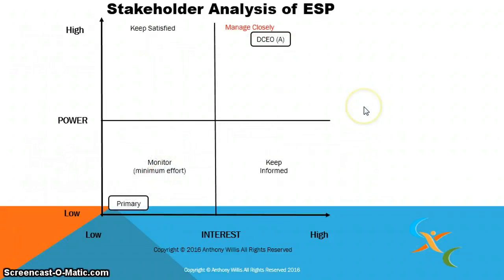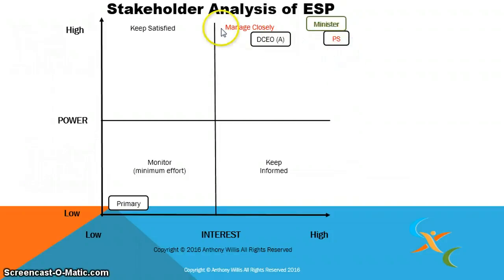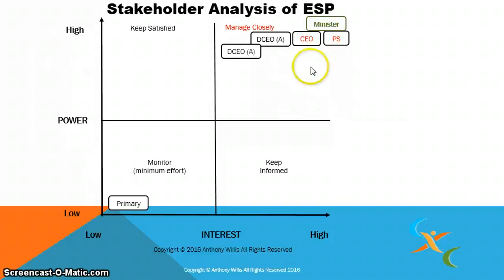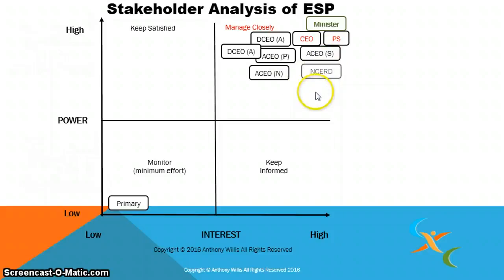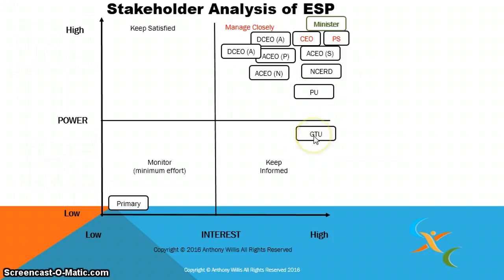This structured approach gives you a better understanding of what and who are involved. Managed closely: the Deputy Chief Education Officer. The Minister — high power. The Permanent Secretary — very high. The CEO of Education. These are the people who make decisions. These are the different units: Acting Assistant Chief Education Officer, Primary, Secondary, Insert and Search Zone Program Unit, GTU — Guyana Teachers Union — and PTA — Parent Teachers Association.